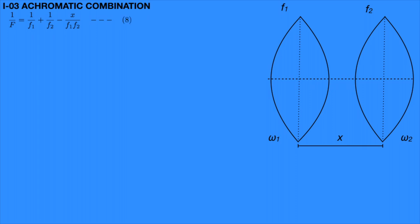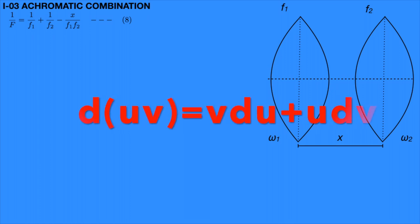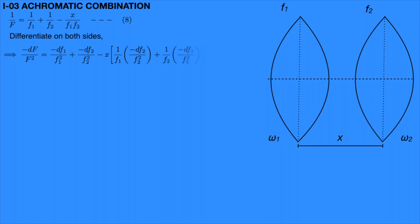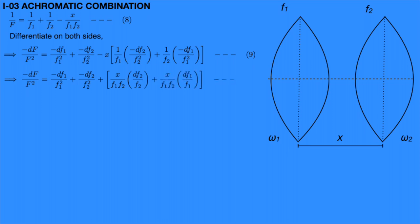The extra term in equation 8 is x/(f1·f2), which can be differentiated using the UV method. Differentiating equation 8 on both sides gives: −dF/F² = −df1/f1² − df2/f2² − x·[1/f1·(−df2/f2²) + 1/f2·(−df1/f1²)]. Assume this is equation 9. Solving equation 9: −dF/F² = −df1/f1² − df2/f2² + (x/f1f2)·(df2/f2) + (x/f1f2)·(df1/f1).